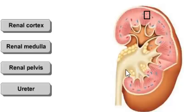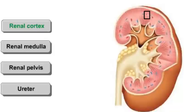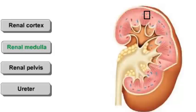Let us look at each of the structures in detail. First, the renal cortex is the outer granular appearing region of the kidney. All nephrons originate in the cortex. The second part is the renal medulla, which is an inner region with striated appearing triangles called renal pyramids.